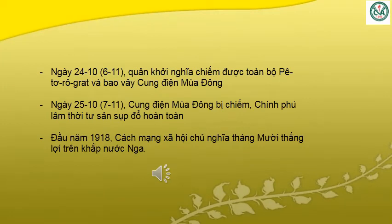Ngày 24 tháng 10 (tức ngày 6 tháng 11), quân khởi nghĩa chiếm được toàn bộ Petrograd và bao vây cung điện mùa đông. Ngày 25 tháng 10 (tức ngày 7 tháng 11), cung điện mùa đông bị chiếm. Chính phủ lâm thời tư sản sụp đổ hoàn toàn. Đầu năm 1918, cách mạng xã hội chủ nghĩa tháng 10 thắng lợi trên khắp nước Nga rộng lớn.